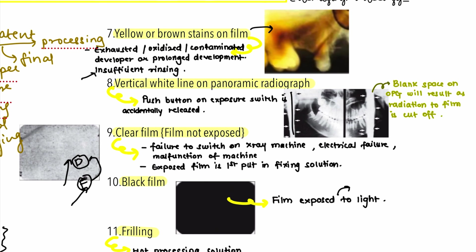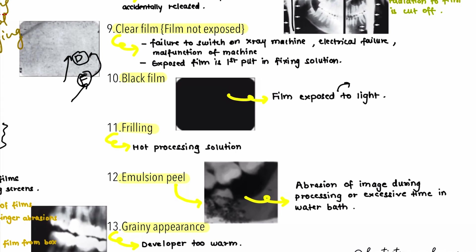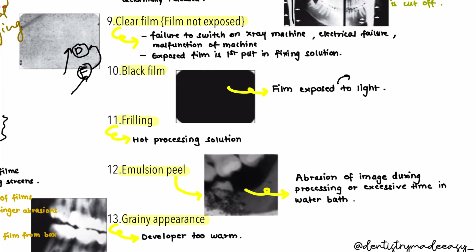The next error is frilling, which occurs if the processing solution is too hot — maintain proper processing temperature to avoid this. Emulsion peel results from abrasion of the image during processing or excessive time in the water bath. The last error is a grainy appearance, which can occur if the developer solution is too warm — always maintain proper time and temperature during processing.